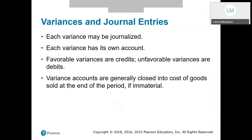Our variances are going to be journalized. Each variance is going to have its own account. When we're doing our journal entries, favorable variances are credits, unfavorable variances are debits. And variance accounts are generally closed into the cost of goods sold at the end of the period.